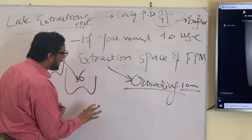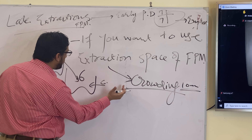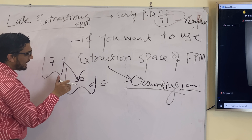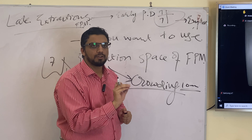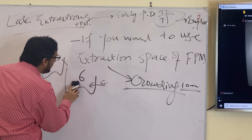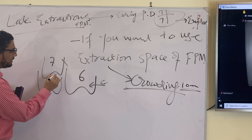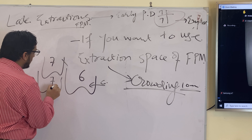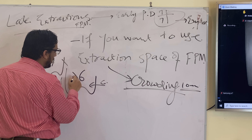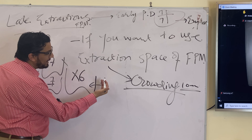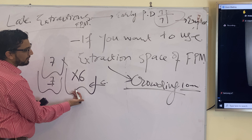The concept is: if you extract the first permanent molar early in the mixed dentition, the seventh takes the position of the sixth and all the space is consumed by the seventh. But if you want this space for correction of anterior crowding, you wait, hold the sixth, wait for the eruption of the seventh, hold the seventh with a Nance appliance or headgear, then extract the sixth and relieve the crowding into that space.